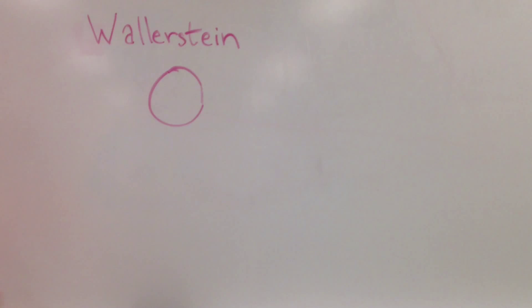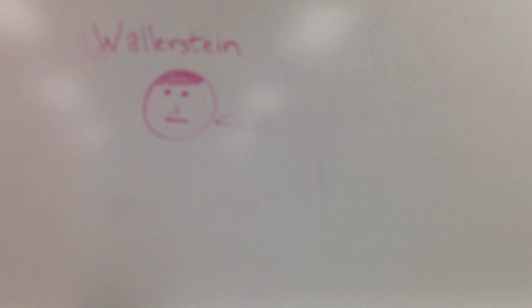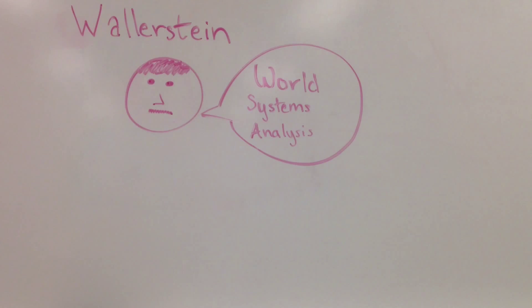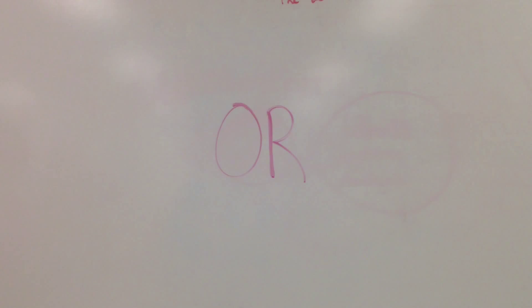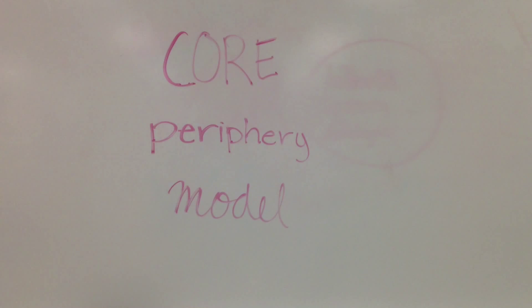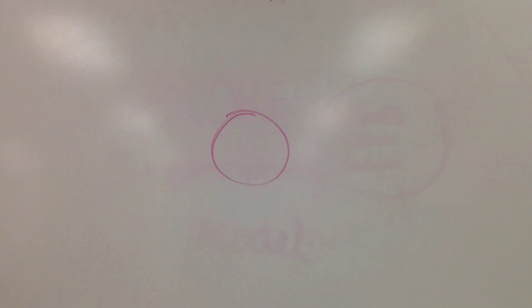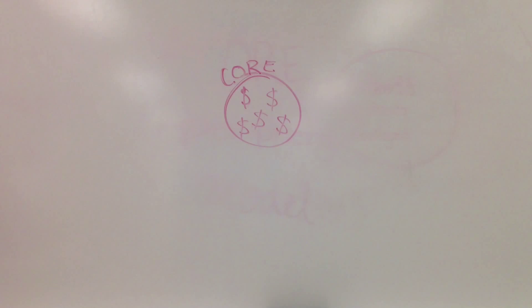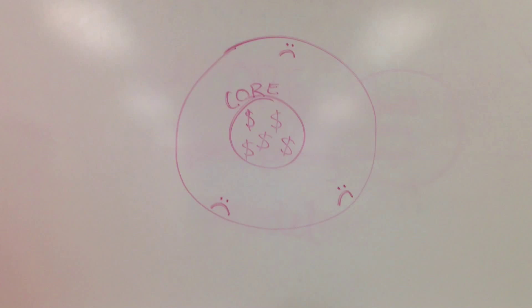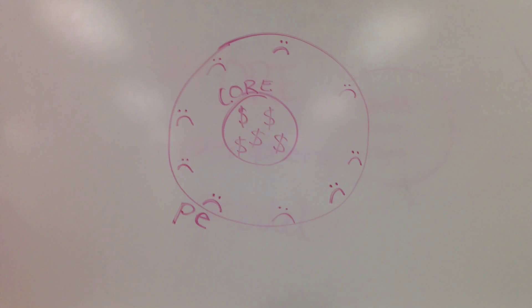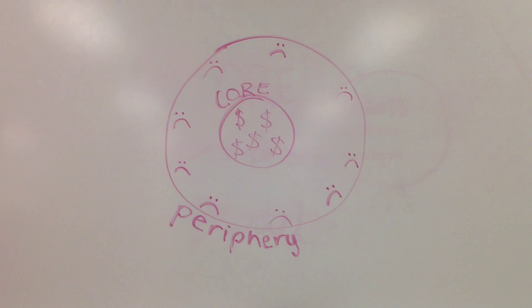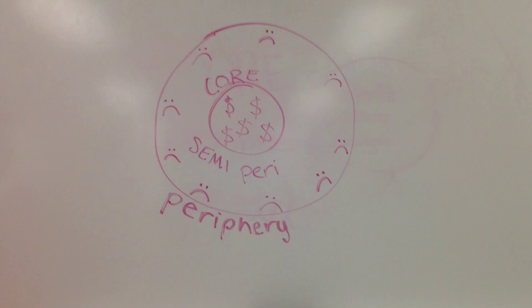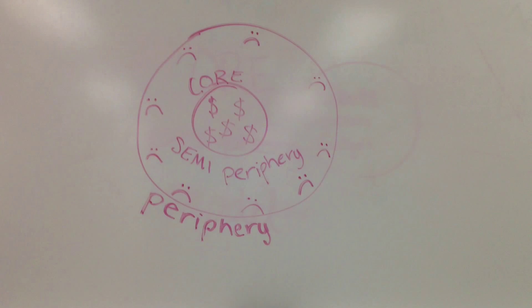Emmanuel Wallerstein was the creator of the world systems analysis, and saw the world as a capitalistic system with interlocking states. This system divides the world into three categories that can shift over time: the core, consisting of industrialized, developed countries that drive the global economy; the semi-periphery, which falls between the economic core and the periphery; and the periphery, which consists of underdeveloped countries.